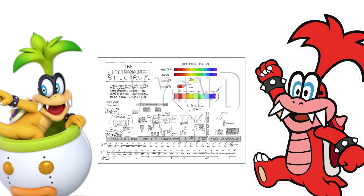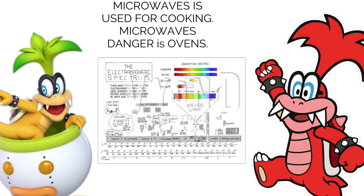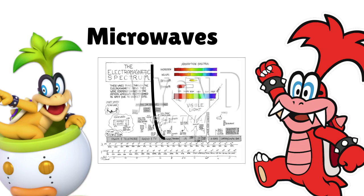Microwaves are used for cooking. Microwave danger is ovens. Microwaves have the second lowest frequency and the next longest wavelength. Microwaves are a form of electromagnetic radiation with wavelengths ranging from about 1 meter to 1 millimeter, with frequencies between 300 megahertz and 300 gigahertz, having the energy of 10 microelectron volts to 100 microelectron volts.